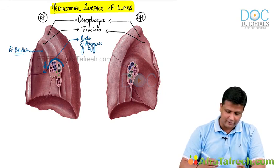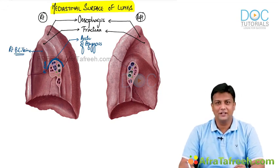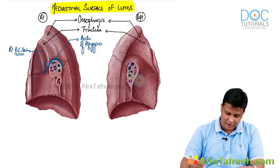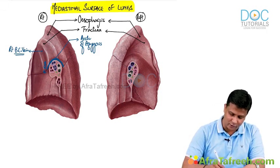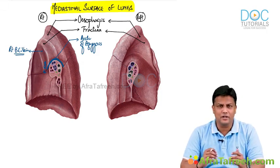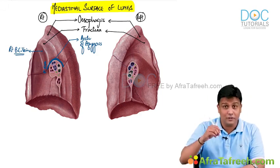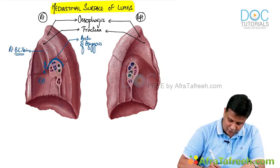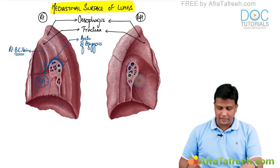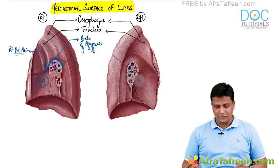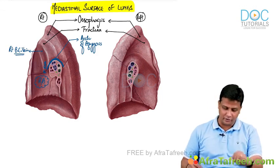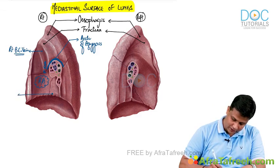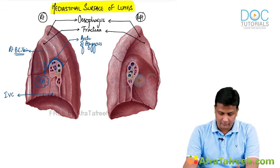Once done with the superior vena cava and right brachiocephalic vein, recall again — superior vena cava drains blood into the right atrium of the heart. So below that, it has to be your cardiac area. That big impression you see is representing the heart, and to be more specific, it is the right atrium. Superior vena cava drains into the right atrium only. And if you can appreciate one small impression below that, that will be the impression for the inferior vena cava.